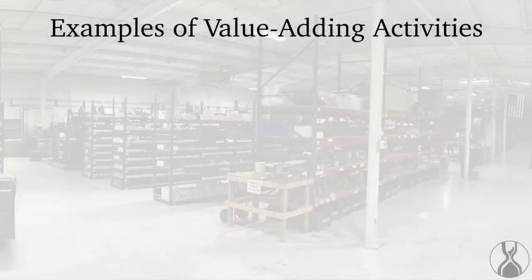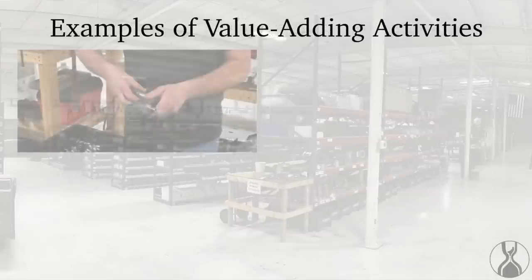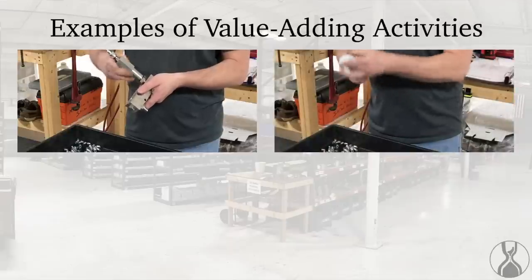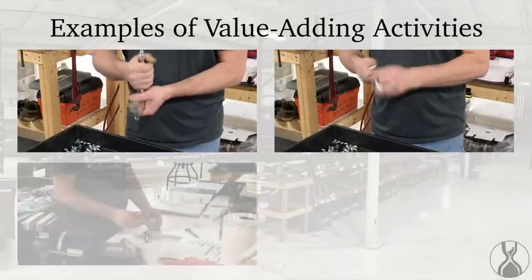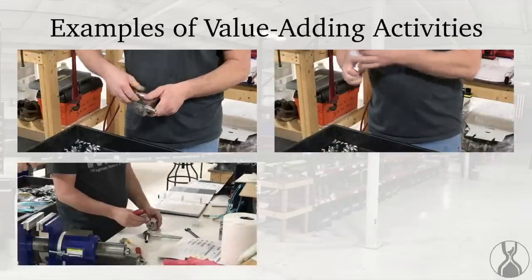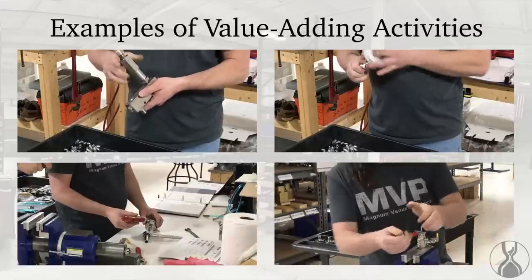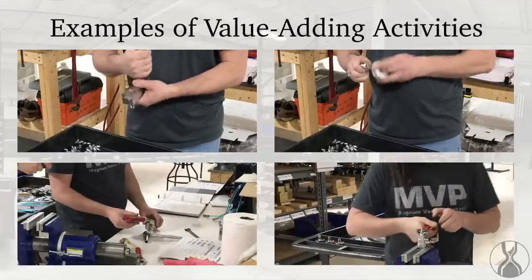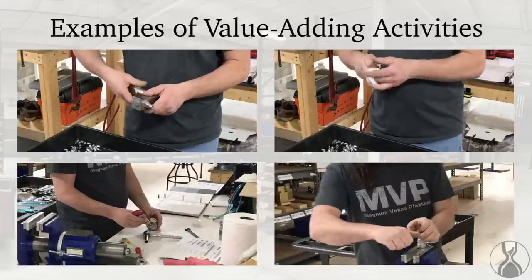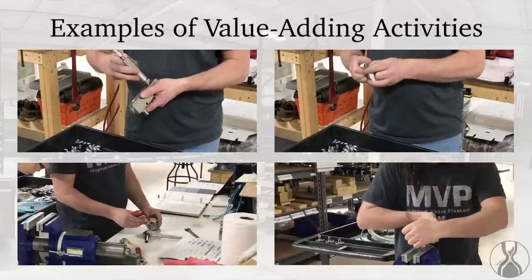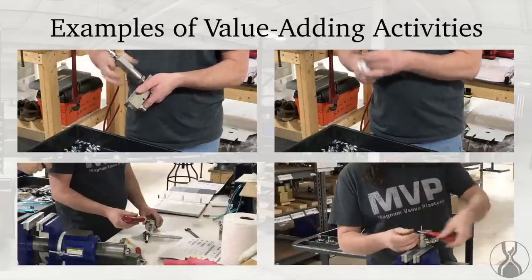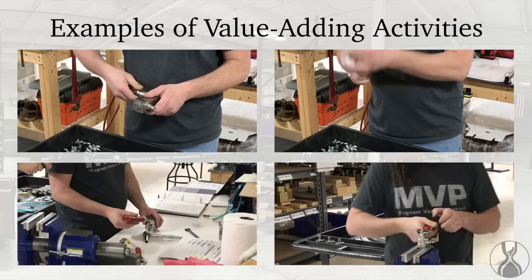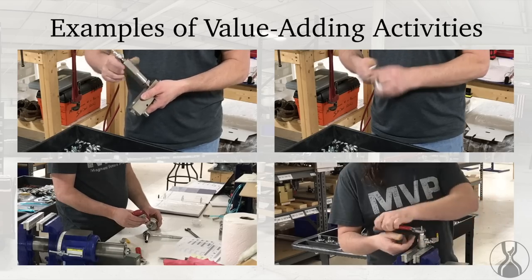Here are some examples of value-adding activities. Here's an operator assembling two parts together. Here he is applying plumber's tape to the thread, and now he's applying glue to some other parts, and here he's tightening a nut on one of these parts. All of these examples are value-adding activities because they actually transform the product — they're the only activities that matter because they're the only ones that create value.